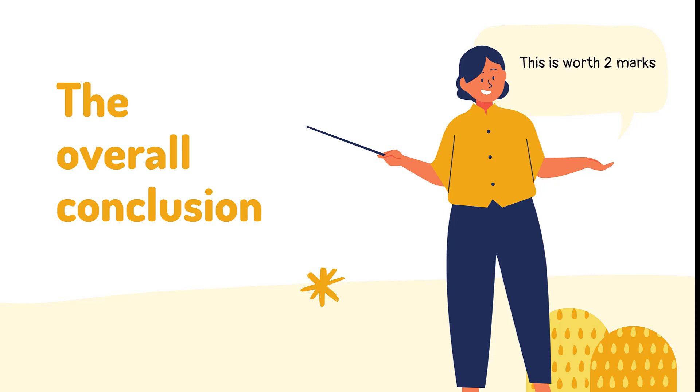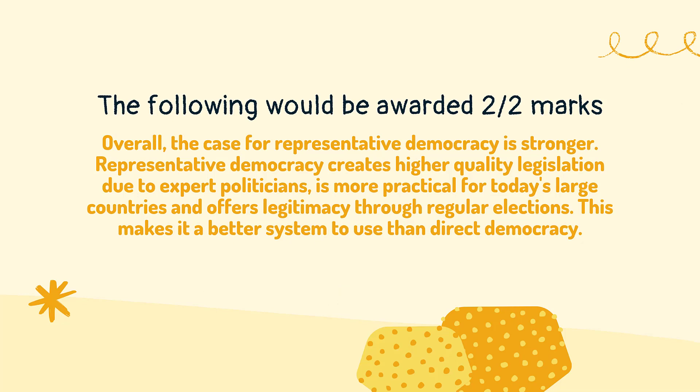To end, we need to look at the overall conclusion, which is worth two marks. The following would be awarded two out of two marks: Overall, the case for representative democracy is stronger. Representative democracy creates higher quality legislation due to expert politicians, is more practical for today's large countries, and offers legitimacy through regular elections. This makes it a better system to use than direct democracy.